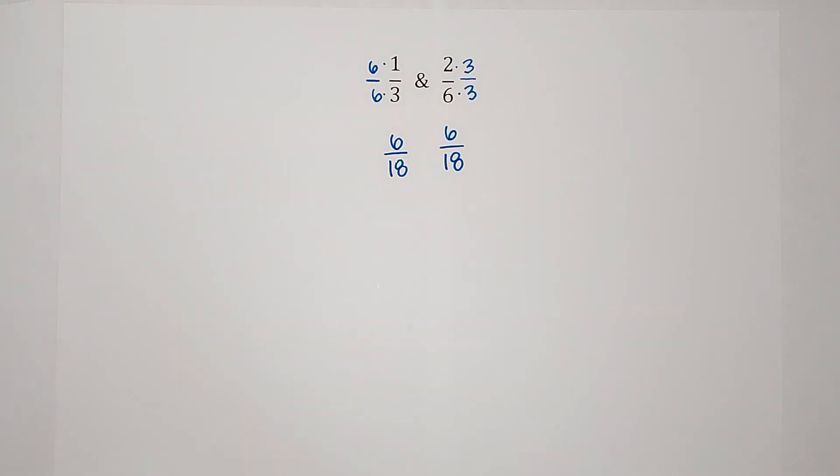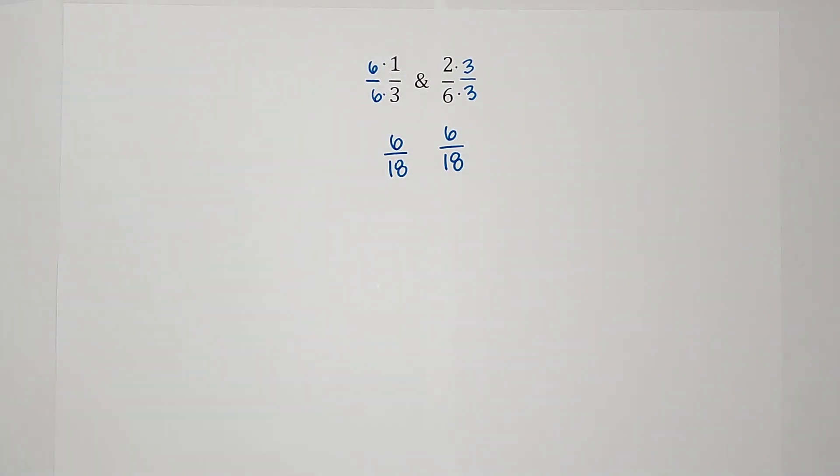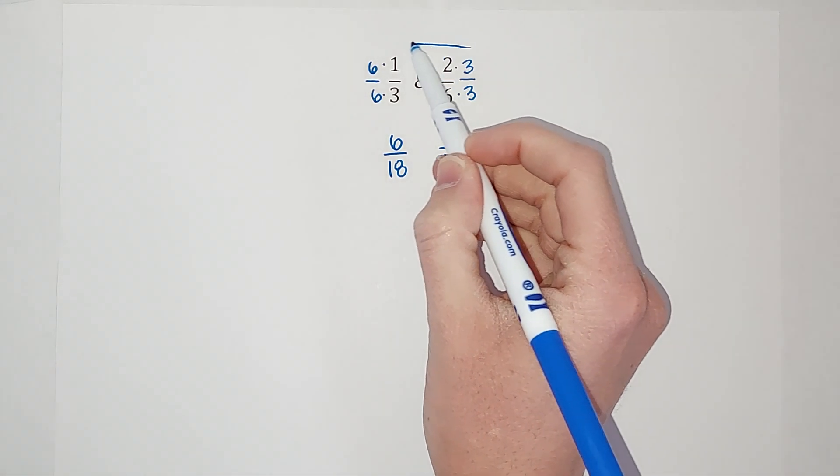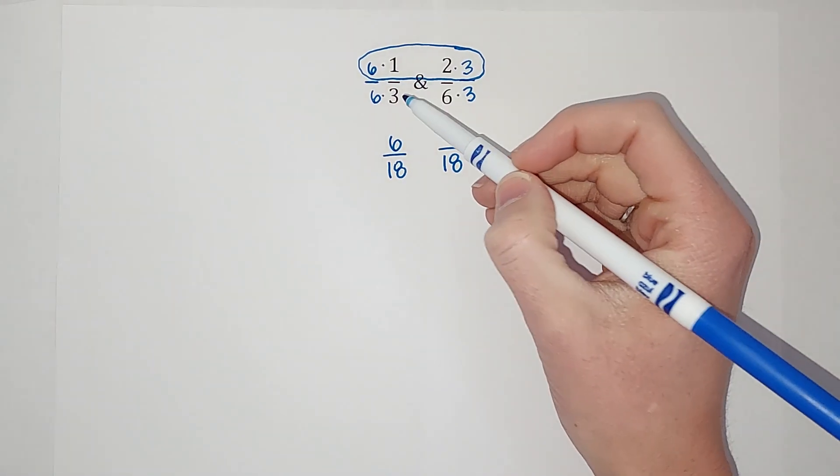Now that their denominators are the same and their numerators are the same, I can see that yes, these are proportional. So basically, when we are doing cross products, we are just doing this top part here. That's what we're doing.